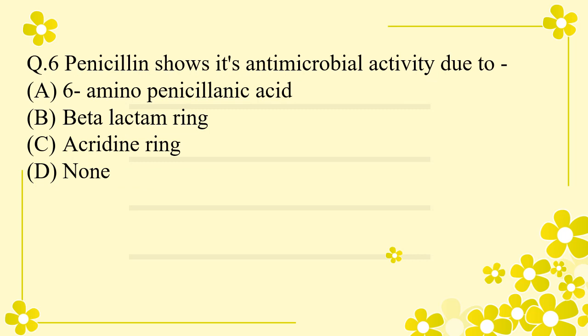Question 6: Penicillin shows its antimicrobial activity due to — Option A: 6-aminopenicillanic acid. Option B: beta-lactam ring. Option C: acridine ring. Option D: none of the above. The right answer is 6-aminopenicillanic acid.